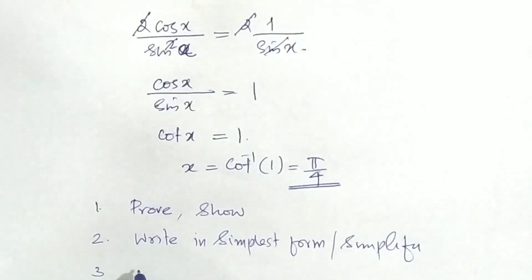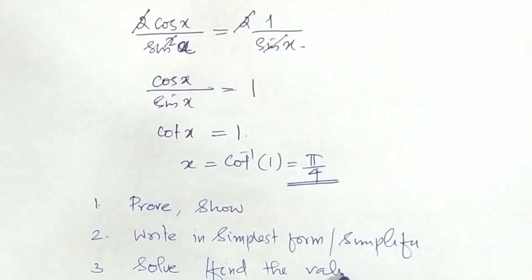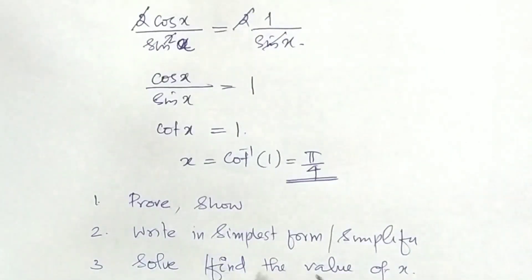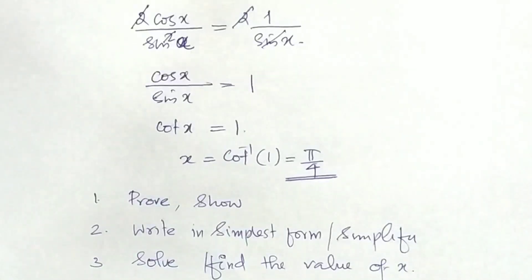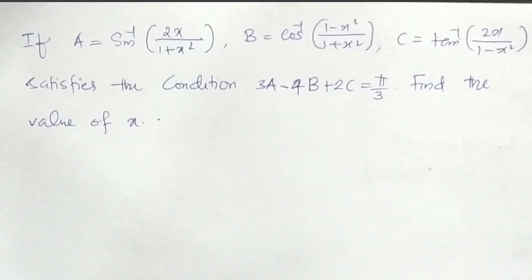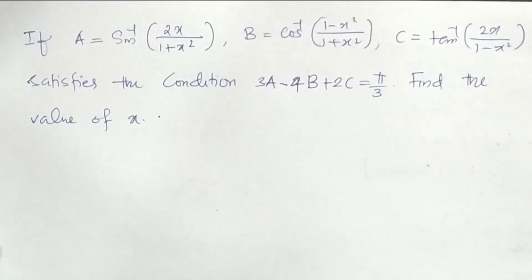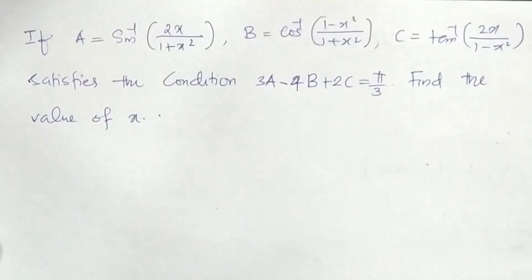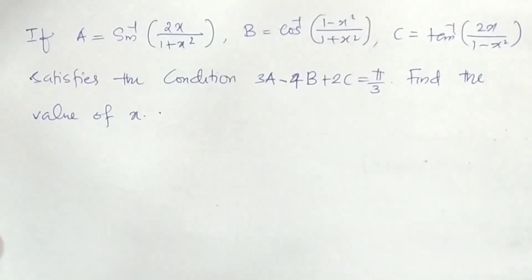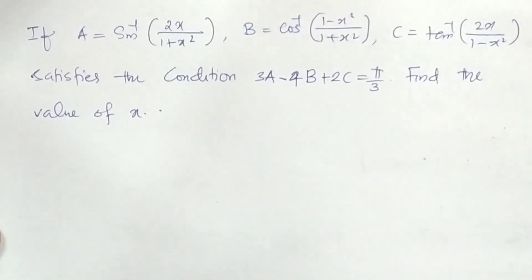After simplification, cos x divided by sin x equals 1, so cos x equals sin x, giving x equals pi/4. Moving to the next question: if a equals sin inverse(2x/(1 plus x squared)), b equals cos inverse((1 minus x squared)/(1 plus x squared)), and c equals tan inverse(2x/(1 minus x squared)), and 3a minus 4b plus 2c equals pi/3, find the value of x.